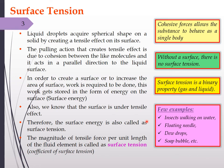Surface tension is a binary property — it is a property of both a gas and a liquid. Examples include insects walking on water due to the tensile effect on the surface, the floating needle experiment, dewdrops attaining a spherical shape, and soap bubbles attaining a spherical shape.